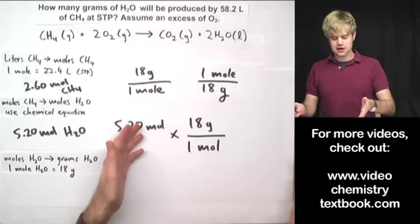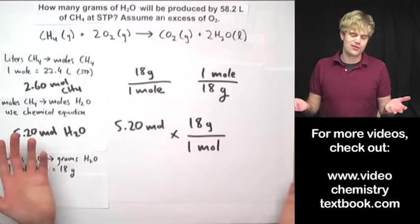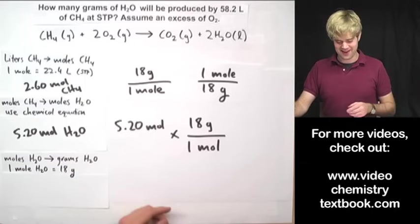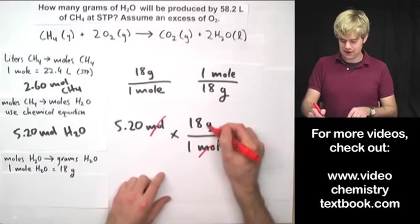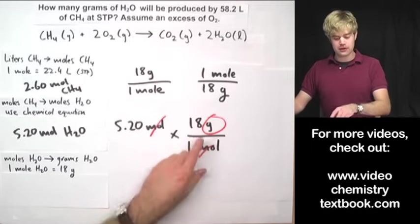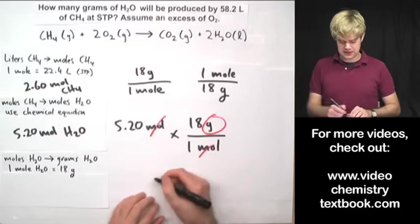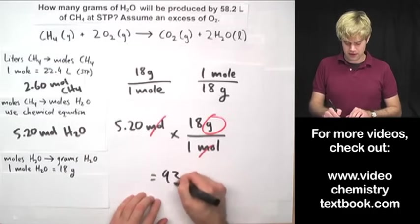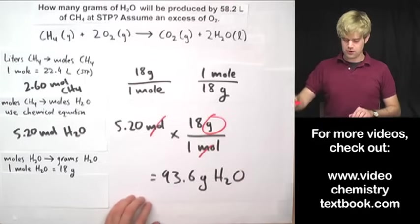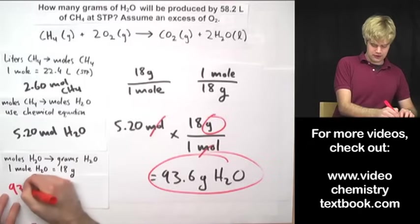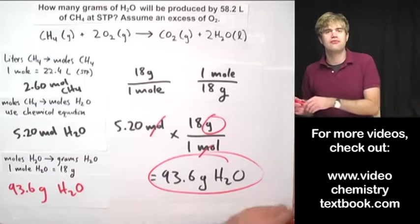You may notice that sometimes I write it with E, sometimes I don't. It's no big deal. It's usually just when I write MOLs because I'm feeling lazy but it's the same thing either way. Anyway, I have moles up here, moles down here. They cancel out and I'm left with grams as my unit which is perfect because that's what I want and the math I'm going to do is 5.2 times 18 gives me 93.6 grams of H2O. And that 93.6 grams H2O is my final answer.